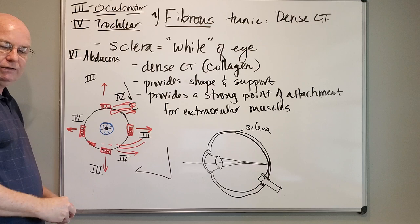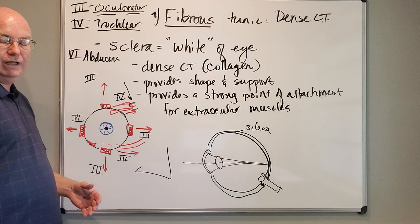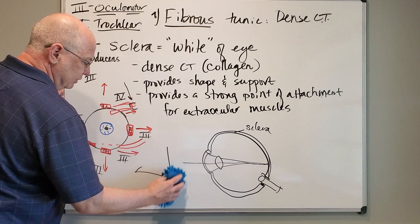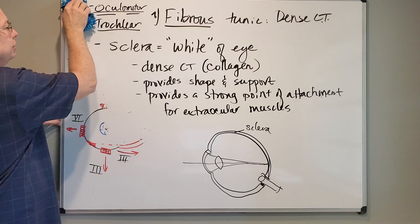So cranial nerve six controls the lateral rectus, cranial nerve four controls the superior oblique, and cranial nerve three controls all the remaining eye muscles. All of those muscles are pulling on this connective tissue, so we want the sclera to be really strong. Now let me move to the second structure of the fibrous tunic, which is the cornea.